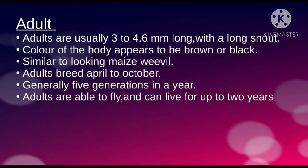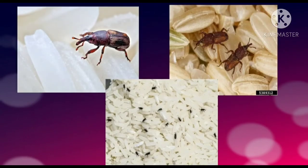Adults are usually 3 to 4.6 millimeters long. They have a long snout, and the color of the body appears to be brown or black. The adults look similar to maize weevils. The breeding season is April to October.